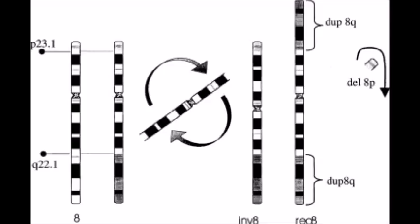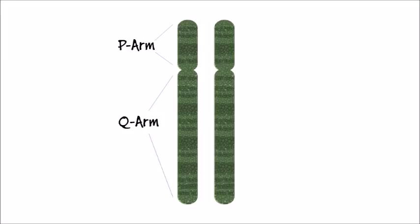Recombinant 8 occurs when there is a deletion on part of the short arm and a duplication on part of the long arm. Chromosomes are divided into two halves called arms. The shorter arm is called P and the longer arm is called Q.